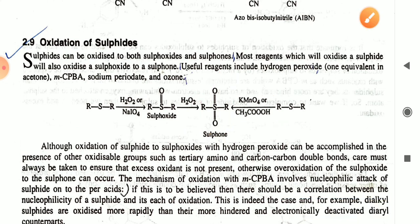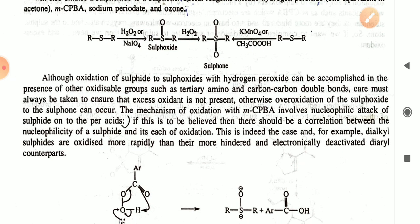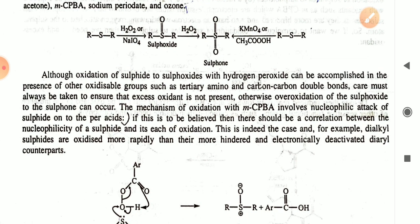This can also be done using camphorsulfonic acid and CH₃COOH as a peracid. The oxidation of sulfide and sulfoxide with hydrogen peroxide can be accomplished in the presence of other oxidizable groups such as a tertiary amino group or a carbon-carbon double bond. Over-oxidation of the sulfoxide to the sulfone can occur.